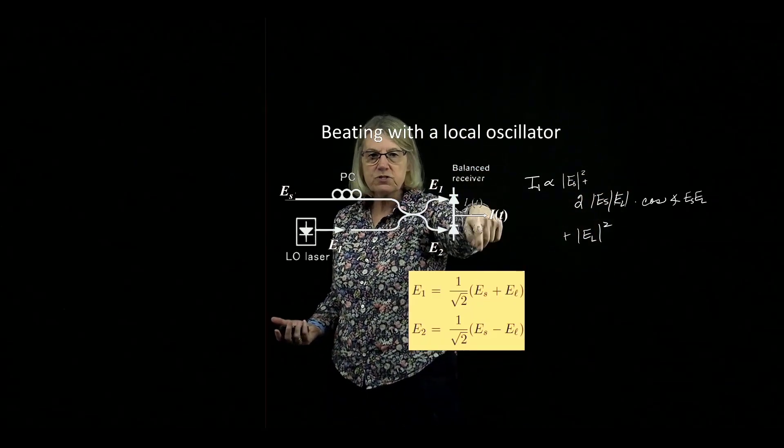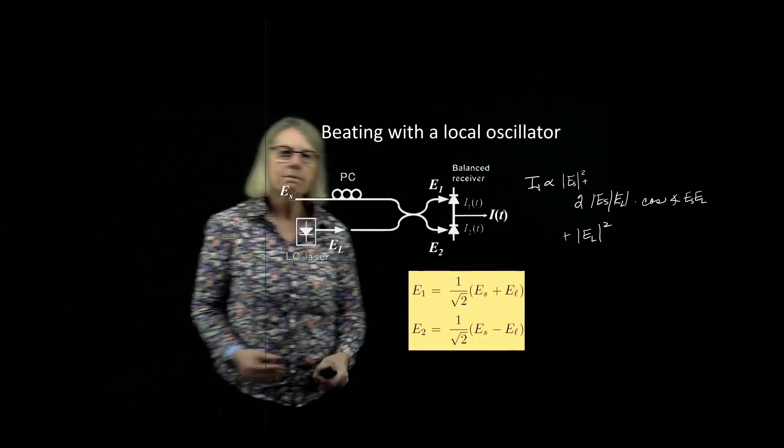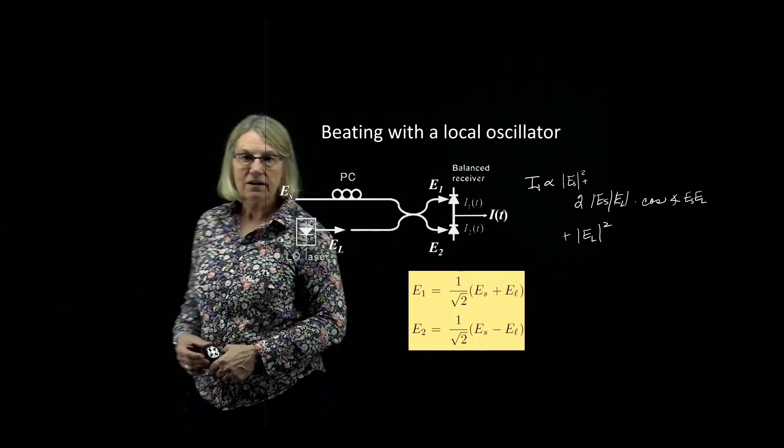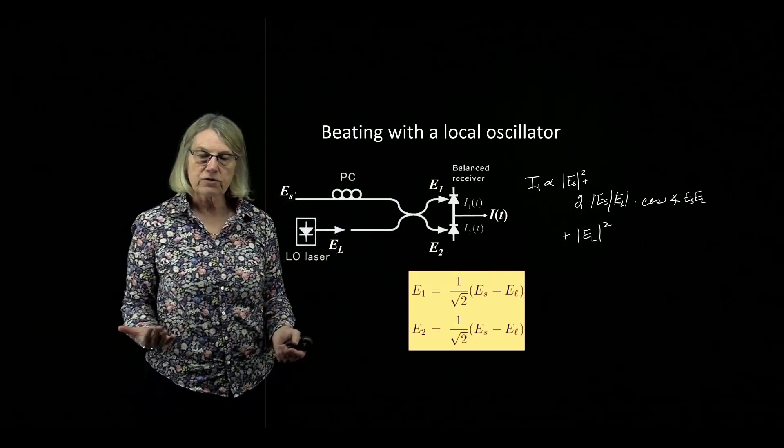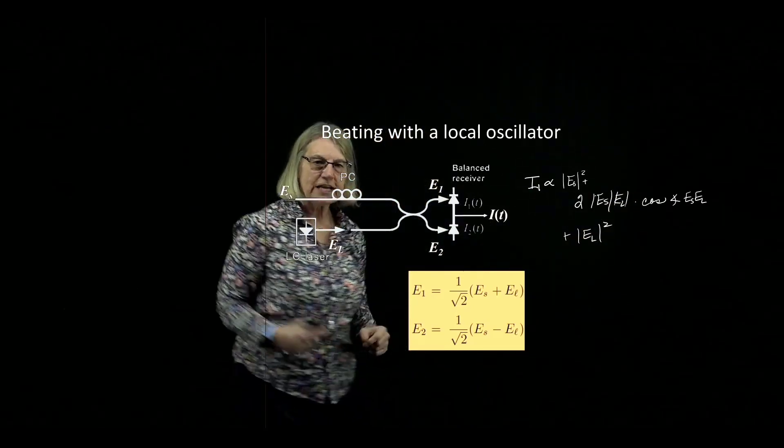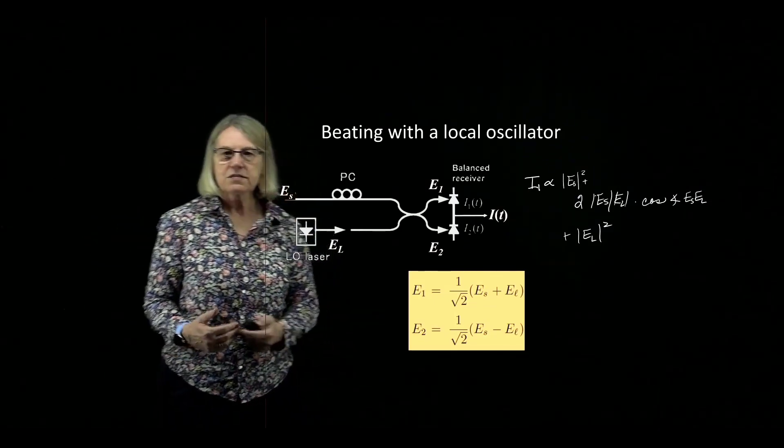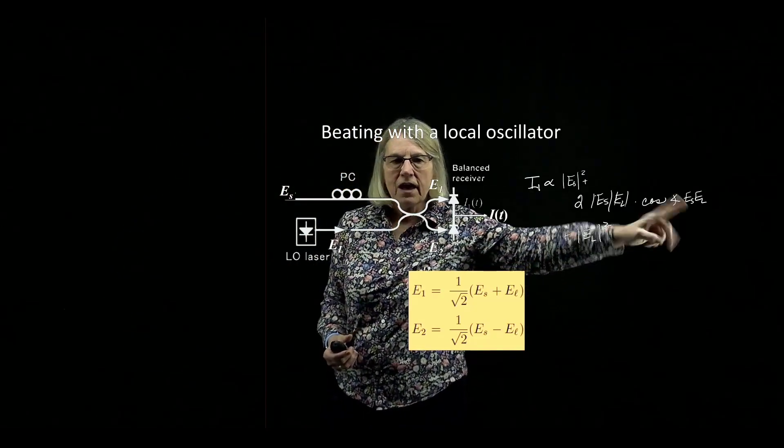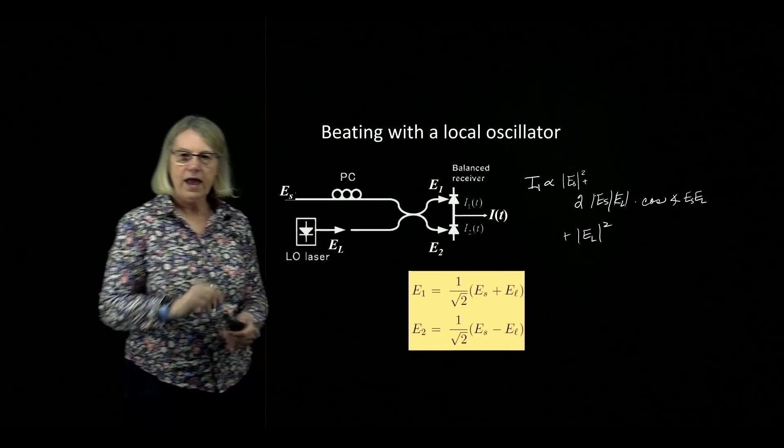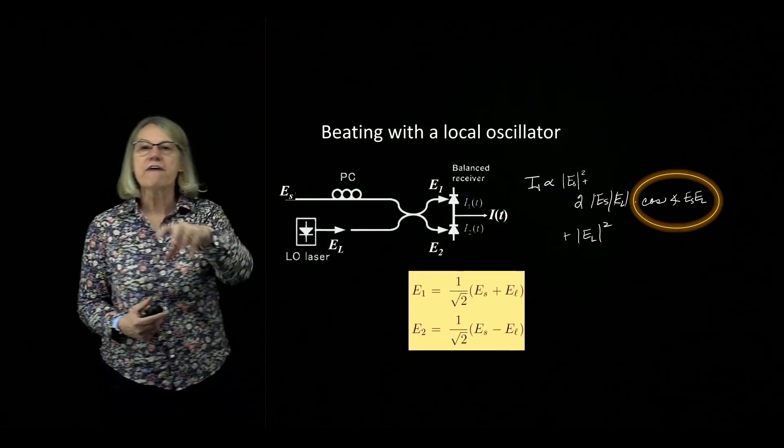I'm going to take this E1 which is incident and square it. I'll get something proportional to the signal squared, the power of the signal. I'll get something proportional to the square of the local oscillator, the modulus squared of the local oscillator electric field, which is the power of the local oscillator. And then I get a cross term - the inner product of these two electric fields incident on the photodiode. This is the beat term, which is proportional to the cosine of the phase between them and to the modulus of the signal and local oscillator. This is the magic term, the beating that's going to let us have access to the phase of the signal.